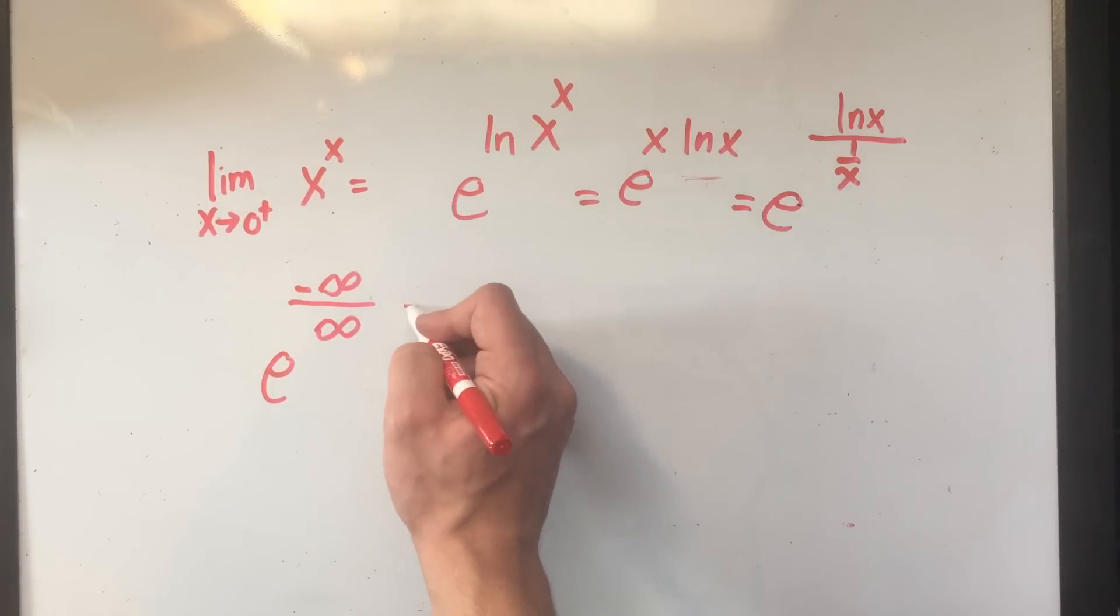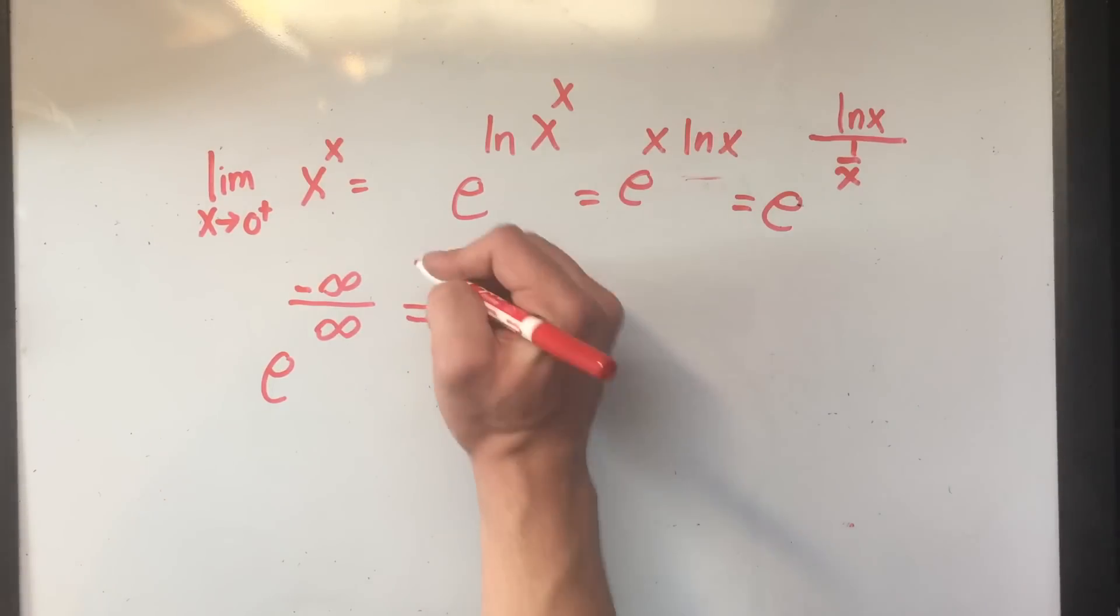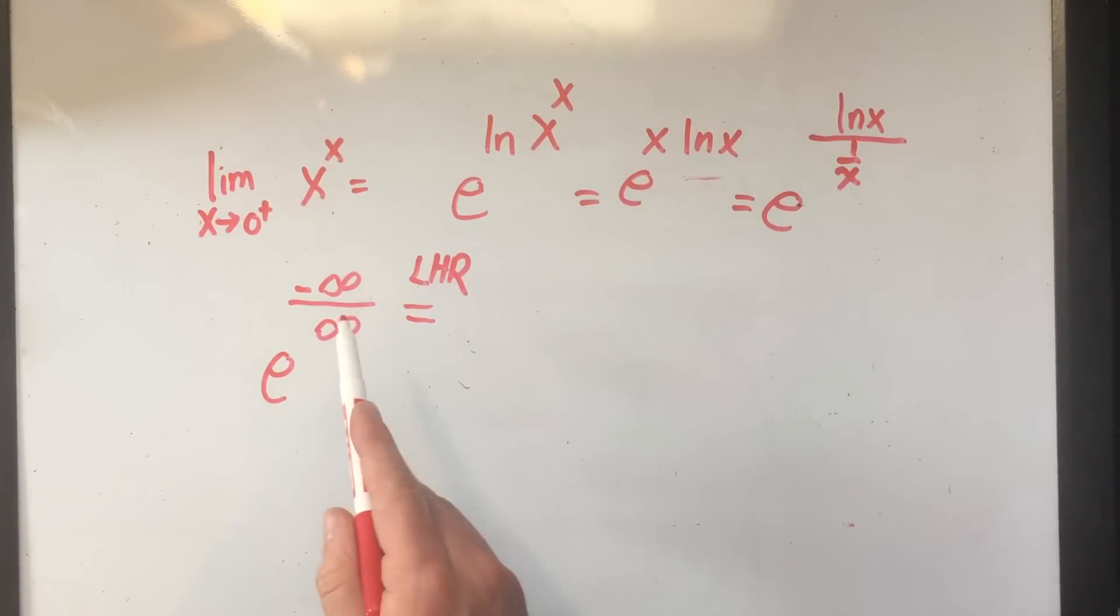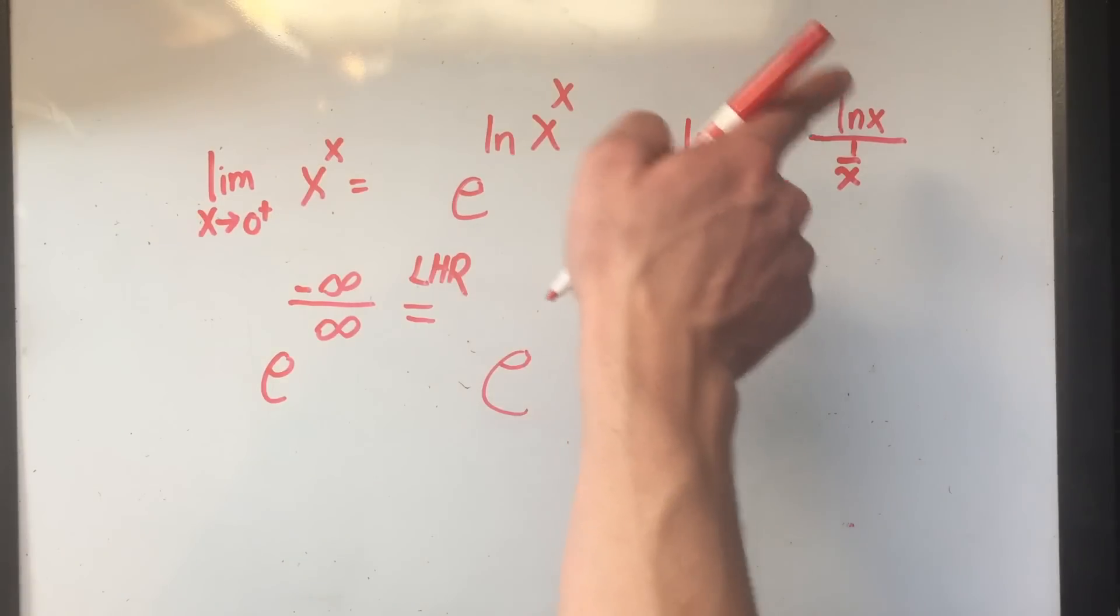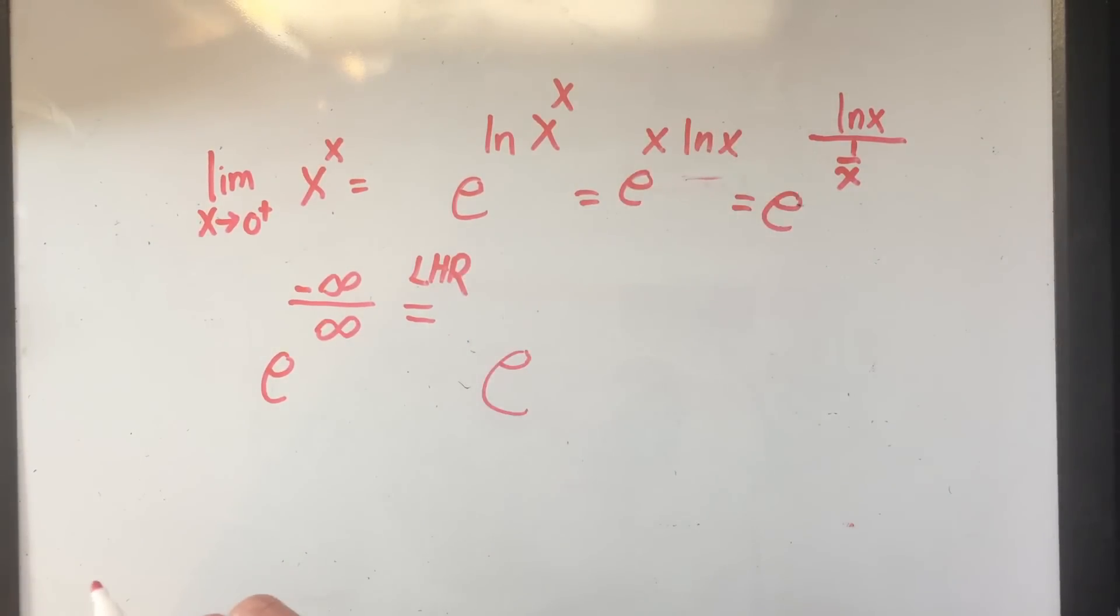Now why is this good? Well, now I can use L'Hopital's rule. L'Hopital's rule says when I get a limit, and I get infinity over infinity, and you can also do it with 0 over 0, I'm allowed to take the derivative of the numerator, and separately take the derivative of the denominator, and try the limit again.